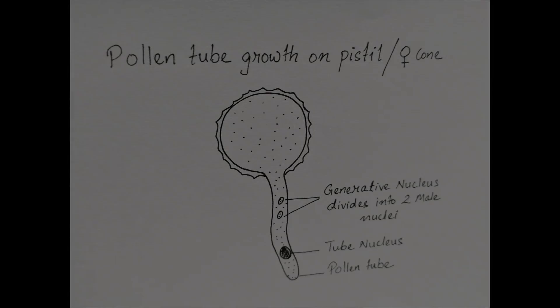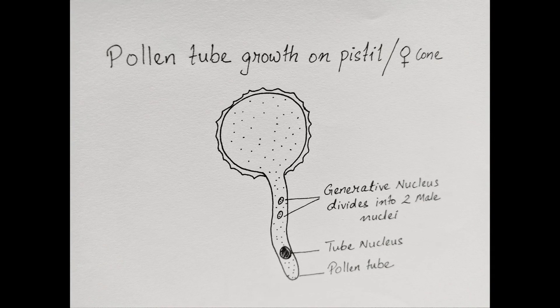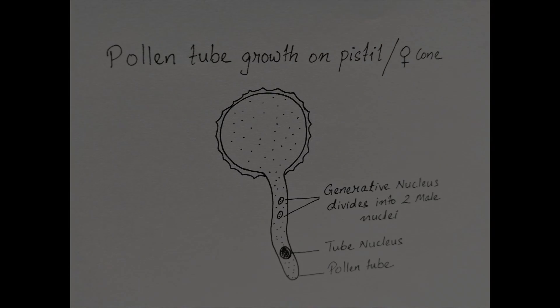When pollen reaches the pistil or female cone, a pollen tube is formed. The generative nucleus divides into two male nuclei which then move into the pollen tube. The tube elongates and transports the sperm nuclei to the ovule containing the female gametophyte.